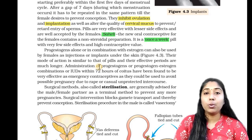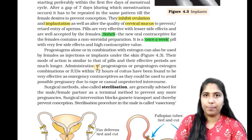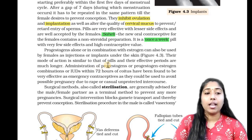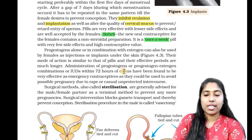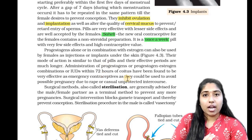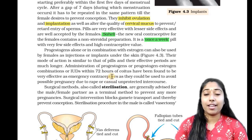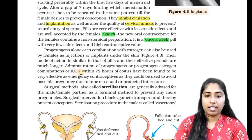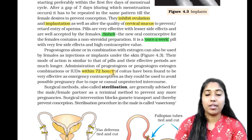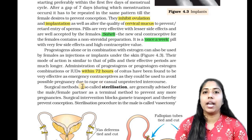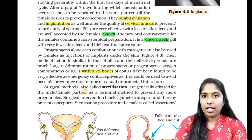We have a little longer duration for OCPs with implants. That is why we can also use them as an emergency contraceptive. If a sexual intercourse has a possibility of pregnancy — for example, in cases of rape — within 72 hours we can take a drug course. That is an emergency contraceptive, and we can avoid pregnancy.